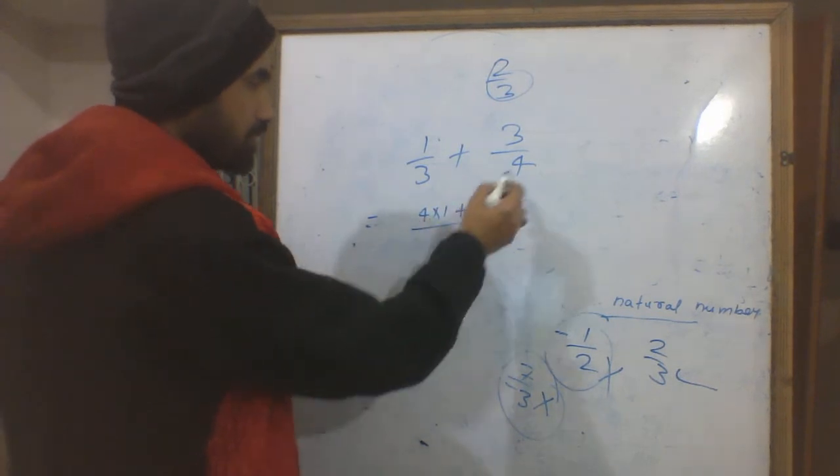Let's find the LCM of 3 and 4. The denominator will be 12. Now, 12 divided by 3 is 4, so multiply the numerator by 4: 4 times 1 equals 4. Similarly, 12 divided by 4 is 3, so multiply by 3: 3 times 3 equals 9. So we have 4/12 plus 9/12, which equals 13/12.